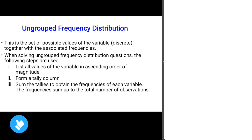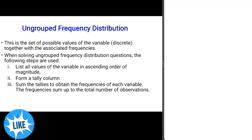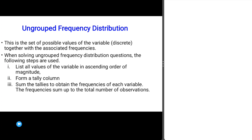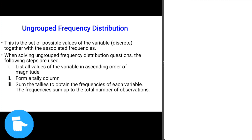Step two: form a tally column for each value of the variable. The tally column helps us know the number of times each particular value occurred. Step three: sum up the tally to obtain the frequency of each variable, so that the frequencies add up to the total number of observations.